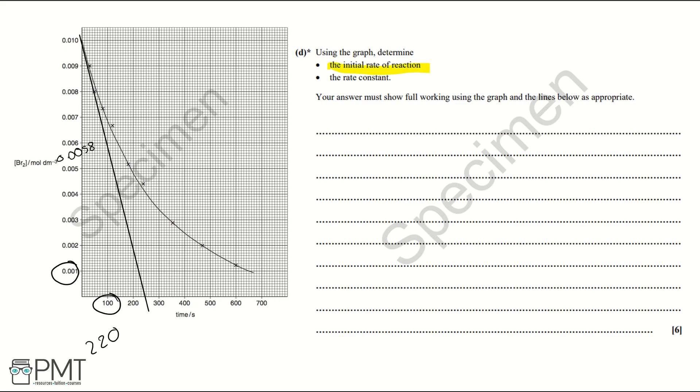So working out the gradient, we would do 0.0058 minus 0.001 divided by 220 minus 100. And that equals 4 times 10 to the negative 5 moles per decimetre cubed per second. And the reason we've got these units is because we've got moles per decimetre cubed as our numerator units and we're dividing by seconds, hence the seconds to the minus one.